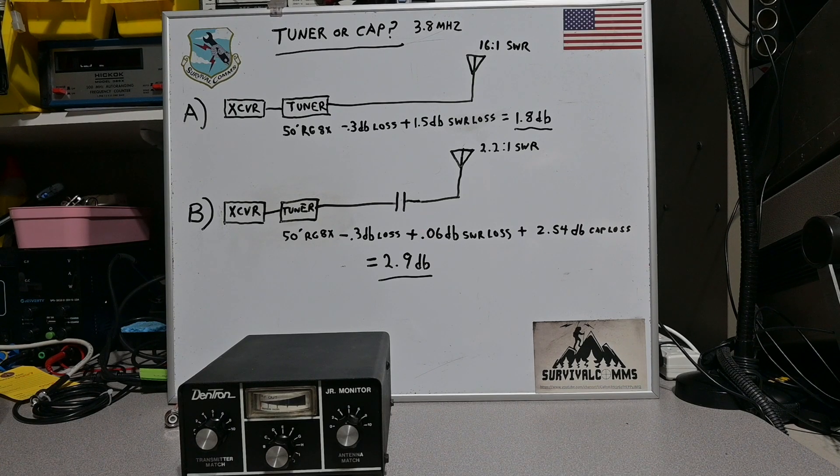For example if we feed our antenna under test with 50 foot of RG-8X without the capacitor our cable loss would be just under three tenths of a dB along with a mismatch loss of 1.5 dB so we're looking at a total loss of 1.8 dB under power regardless of tuner intervention.